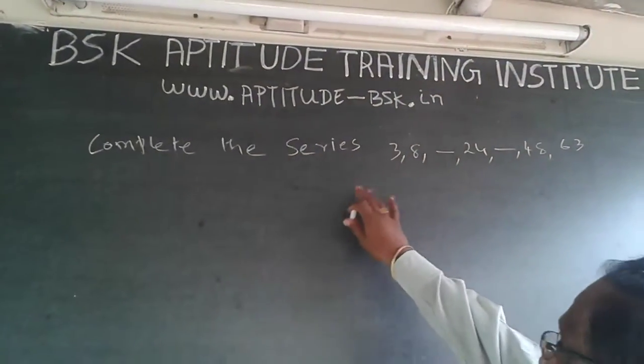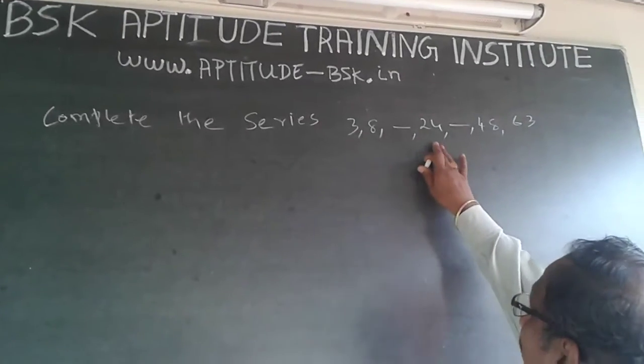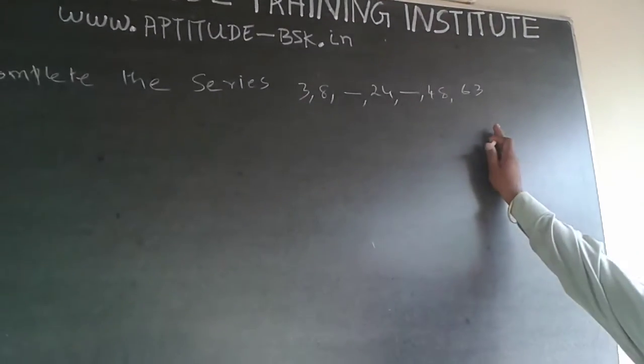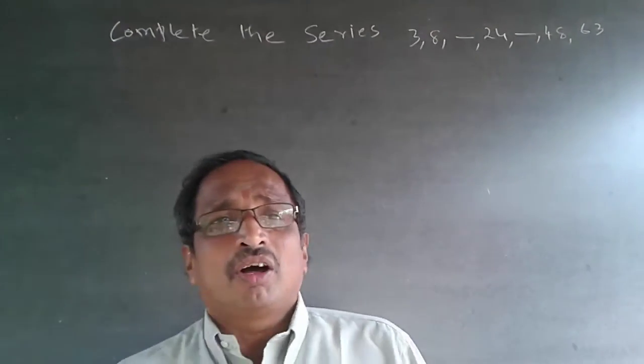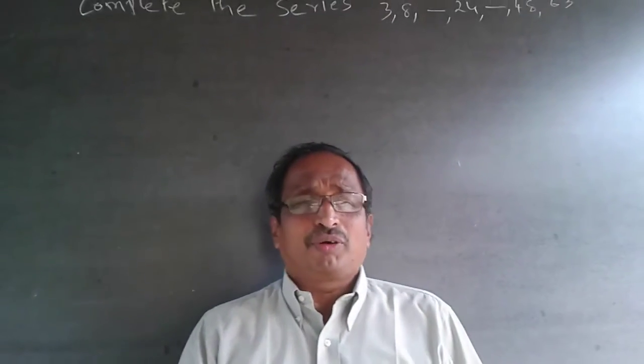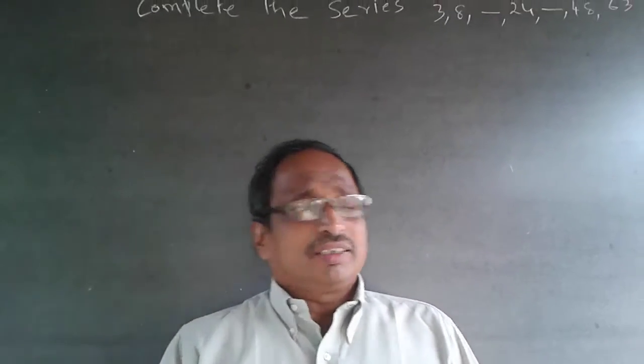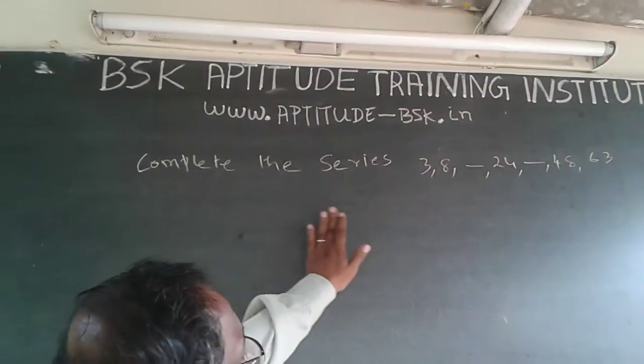The question is: complete the series 3, 8, __, 24, __, 48, 63. This is a quantitative question on number series, very simple. You have to see what pattern is here.